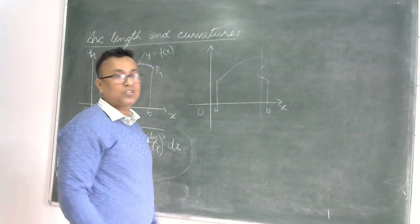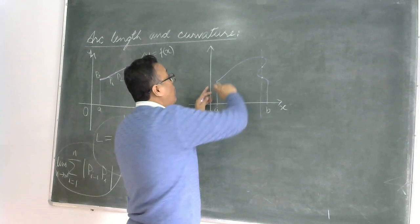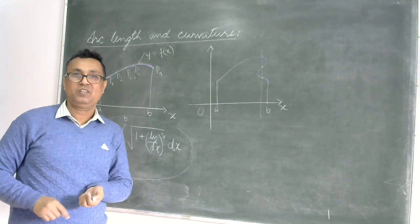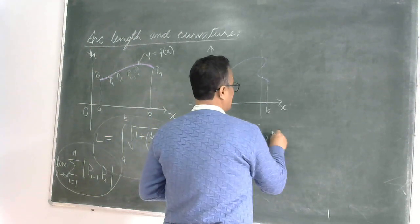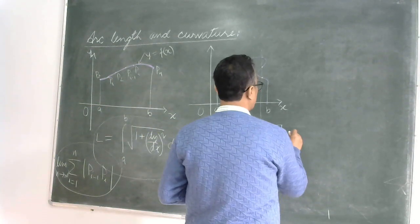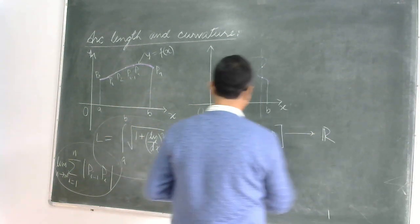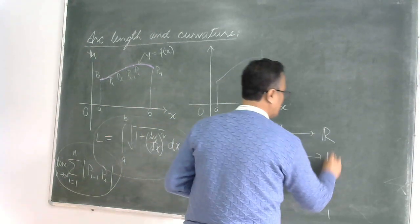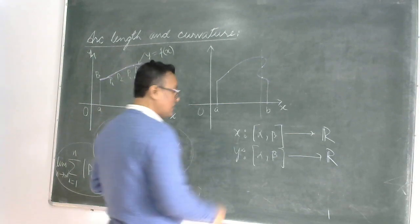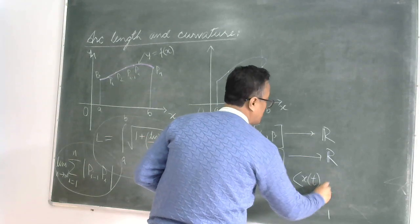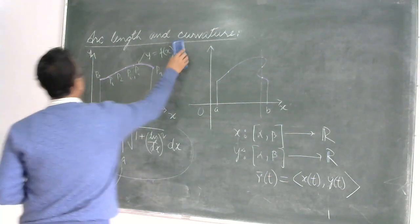In my last lecture, lecture 6, I was trying to find the length of a curve that is not the graph of a function of one variable. What we did was simply parameterize the curve using the variable t. We considered an interval [alpha, beta] and defined two functions such that at each point on this curve we gave it a corresponding vector r(t).